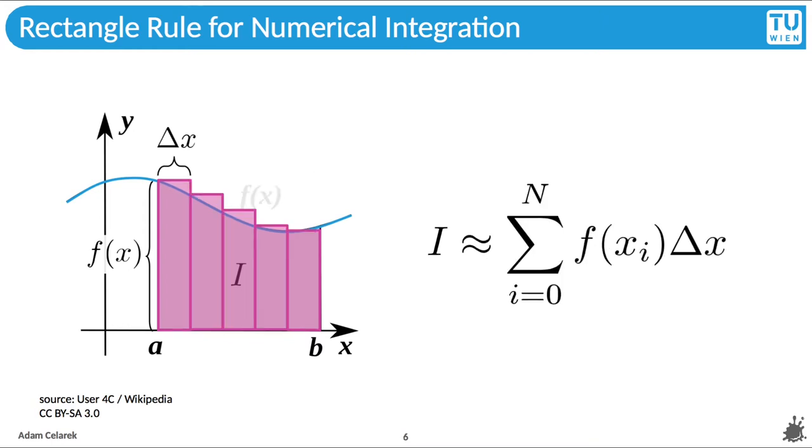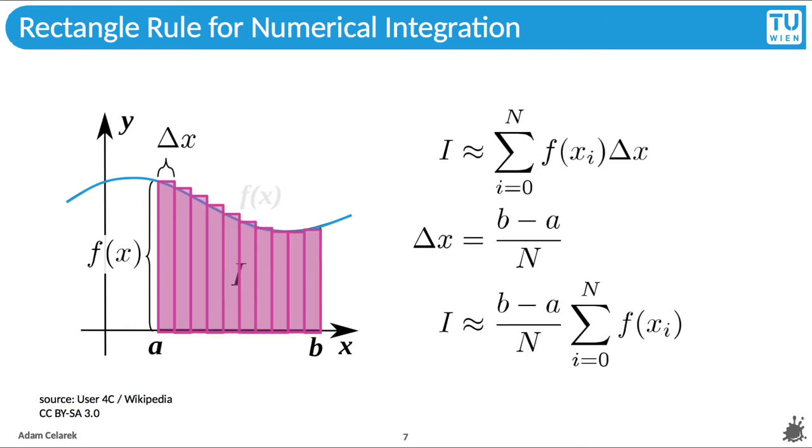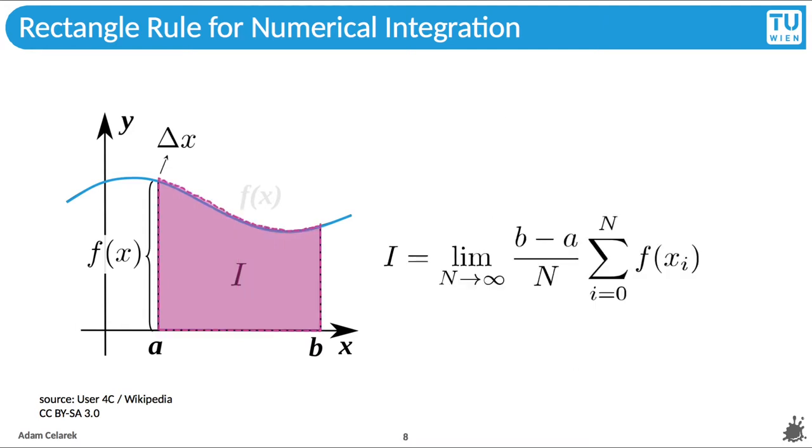Which becomes more precise if we subdivide the rectangle into n parts as shown, and quite obviously the accuracy increases while n grows. Delta x equals b minus a over n and xi are equidistant samples of f in the domain from a to b. Since b minus a over n is independent of i we can pull it out of the sum. Going to infinity would give us the true value of the integral.